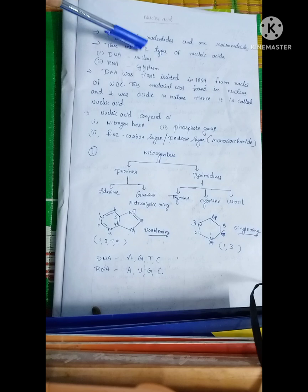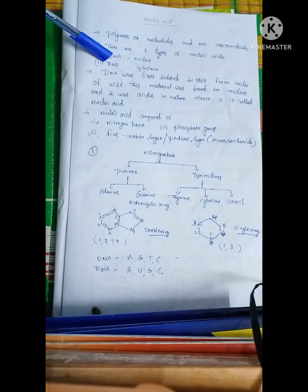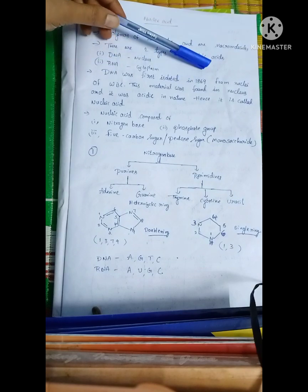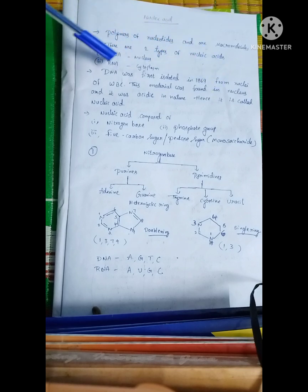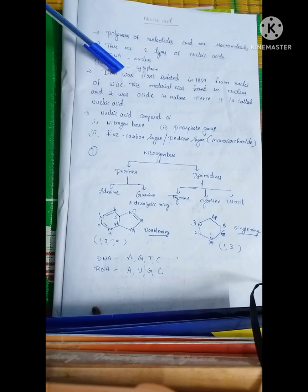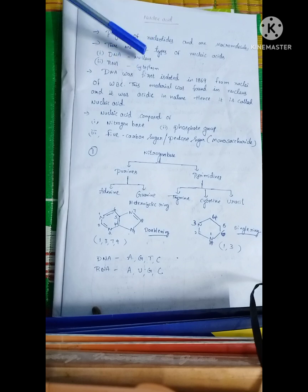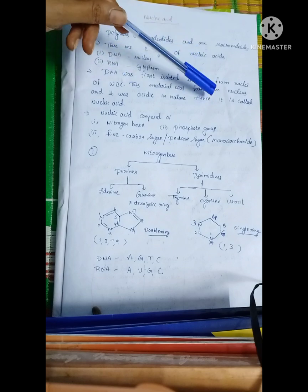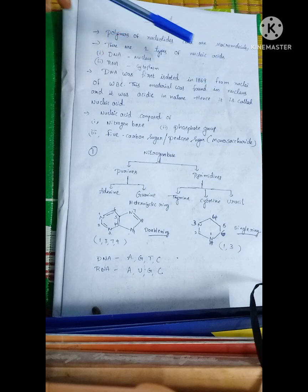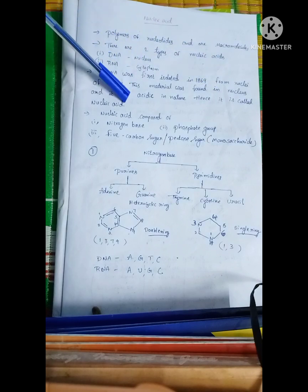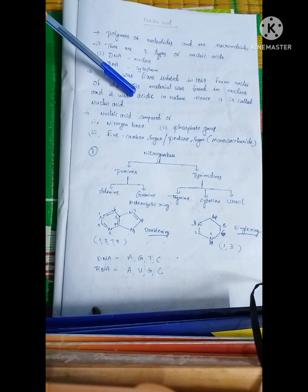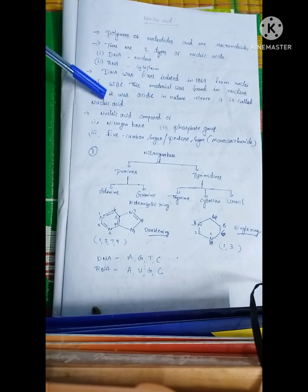DNA is found in the nucleus. RNA is found in the cytoplasm. DNA was first isolated in 1869 from the nucleus of White Blood Cells. This material was found in the nucleus, and because of its acidic nature, it is called nucleic acid.